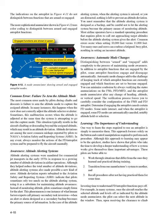Most airline operators have a standard operating procedure that requires pilots to call out approaching target altitudes before the altitude alerting system gives the alert. Common errors occur when setting 10,000 feet versus 11,000 feet — too many ones and zeros can confuse a fatigued, busy pilot, resulting in setting an incorrect altitude.